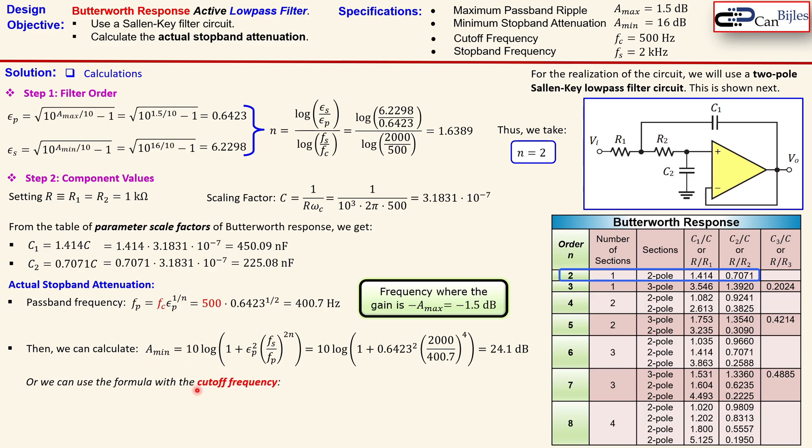There is also another way to calculate the A_min. So we can then use the cutoff frequency right away. That is actually more convenient for this situation. So we can use this formula also much easier.